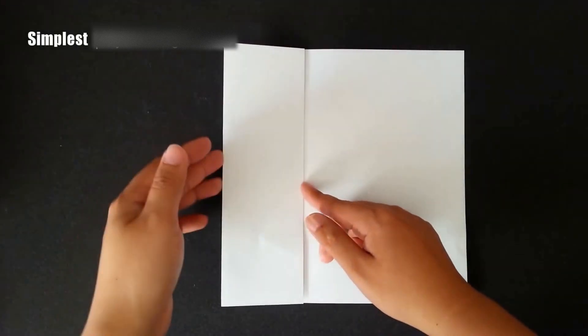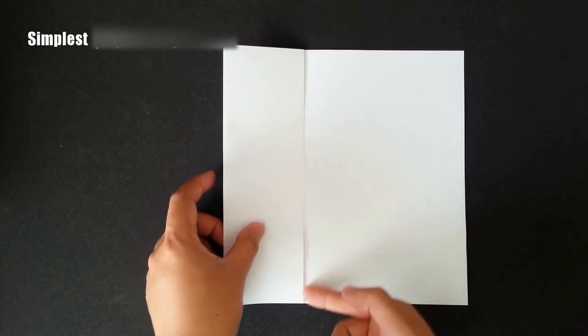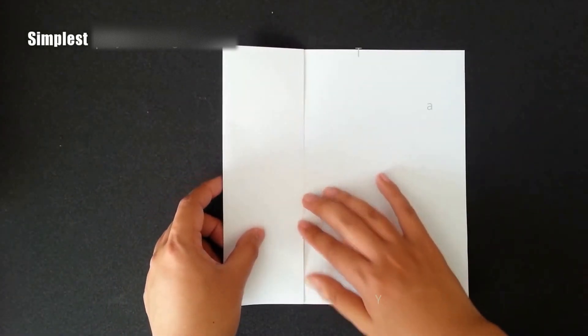Third step, start from this edge, and we use this crease as the reference to fold it down.